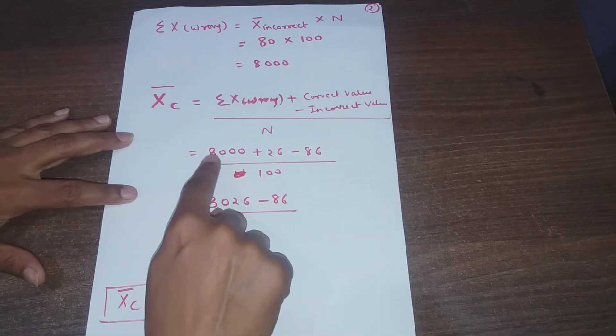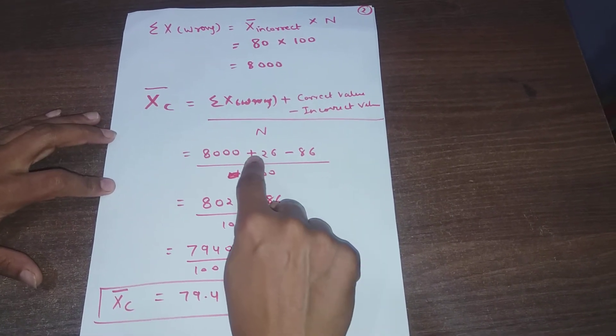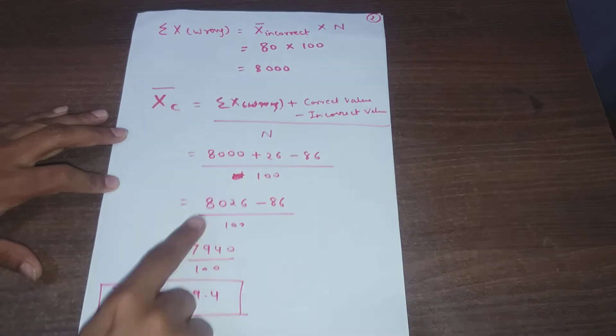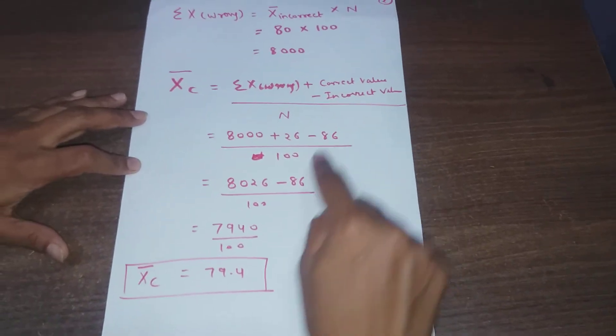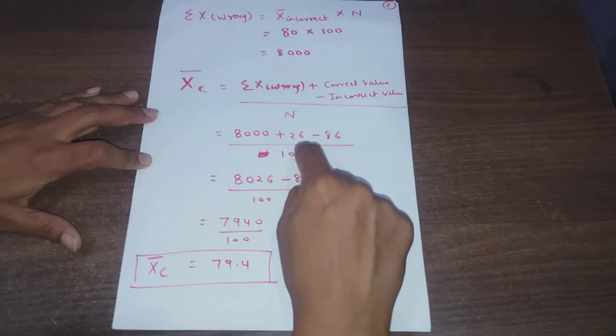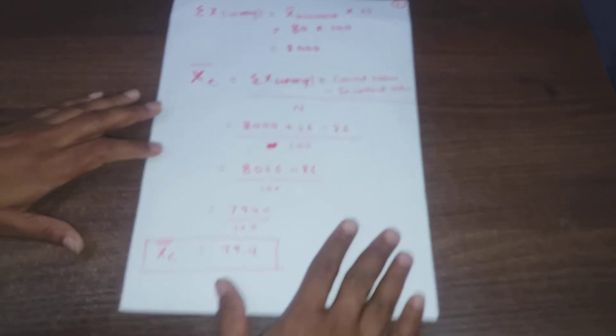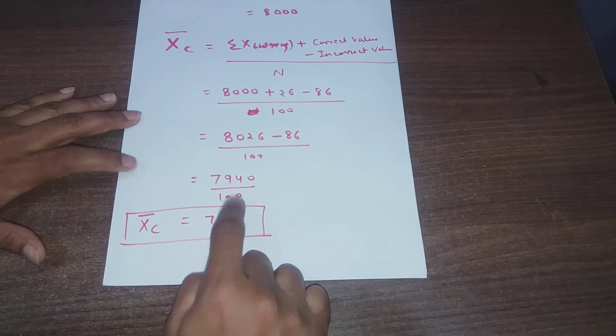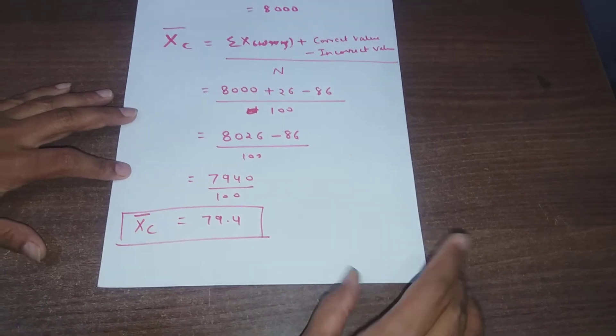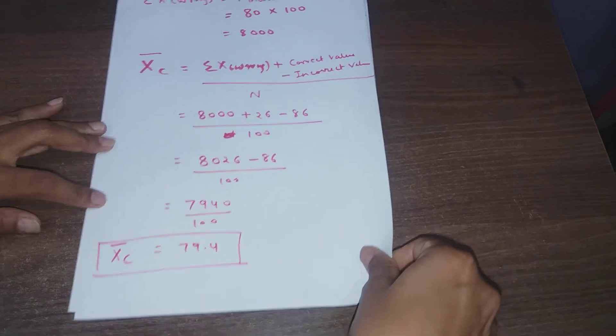Summation of x wrong is 8000 plus 26 is the correct value, which will give you 8026 minus 86 upon 100. On minusing 86, you will get 7940 upon 100, that is 79.4. If you have not understood, go through this video once again and solve this particular sum.